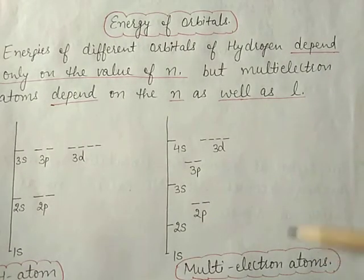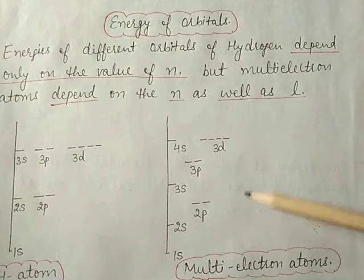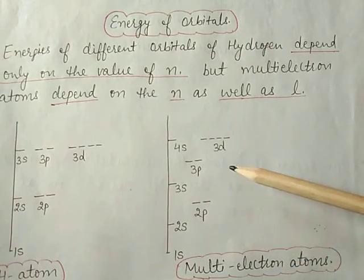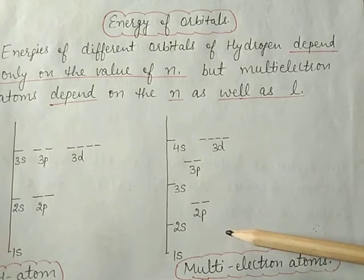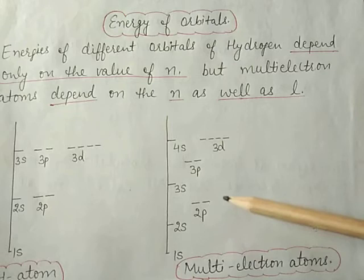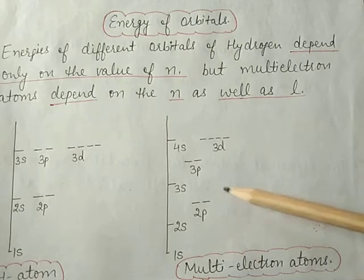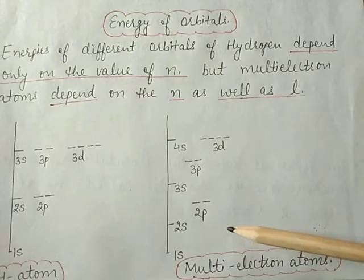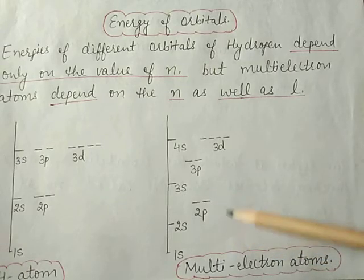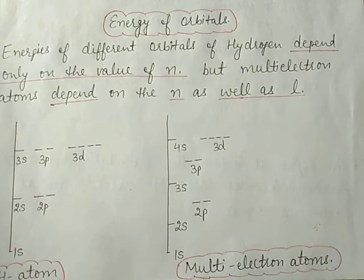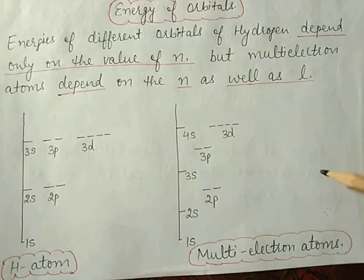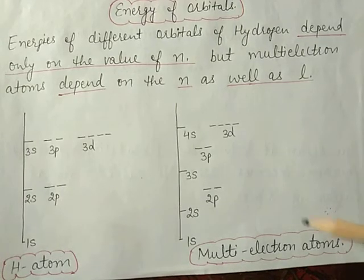For multi-electron atoms, the energy is different for different sub-shells. The main reason for having different energy of sub-shells is the mutual repulsion among the electrons. The energy of an electron in an orbital is affected by the nuclear charge, principal energy levels, and the presence of electrons in lower energy levels. The shielding of outer shell electrons from the nucleus by inner shell electrons is called the shielding effect or screening effect.